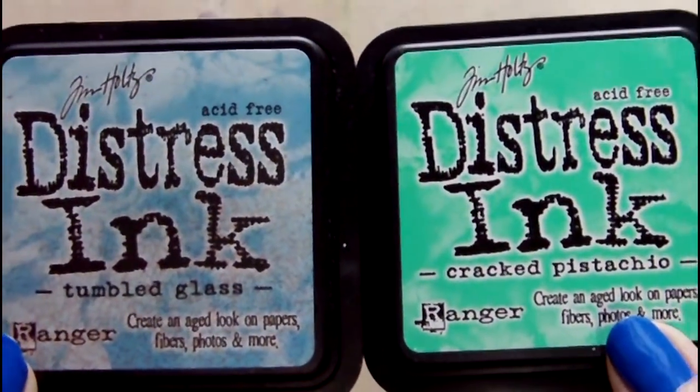Hello, it's Rachel. Today's project is an art postcard. I'm starting with distress inks in cracked pistachio and tumbled glass, using the wrinkle-free distress technique to pick up the ink. I do this several times, drying in between, to get good texture and lots of tiny droplets on my card.